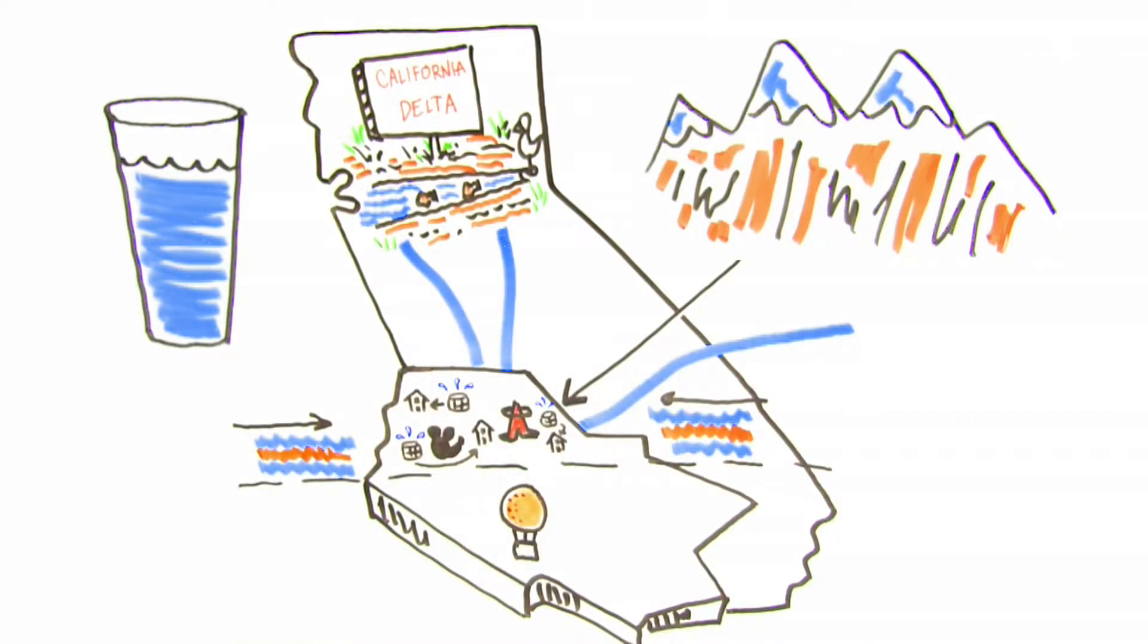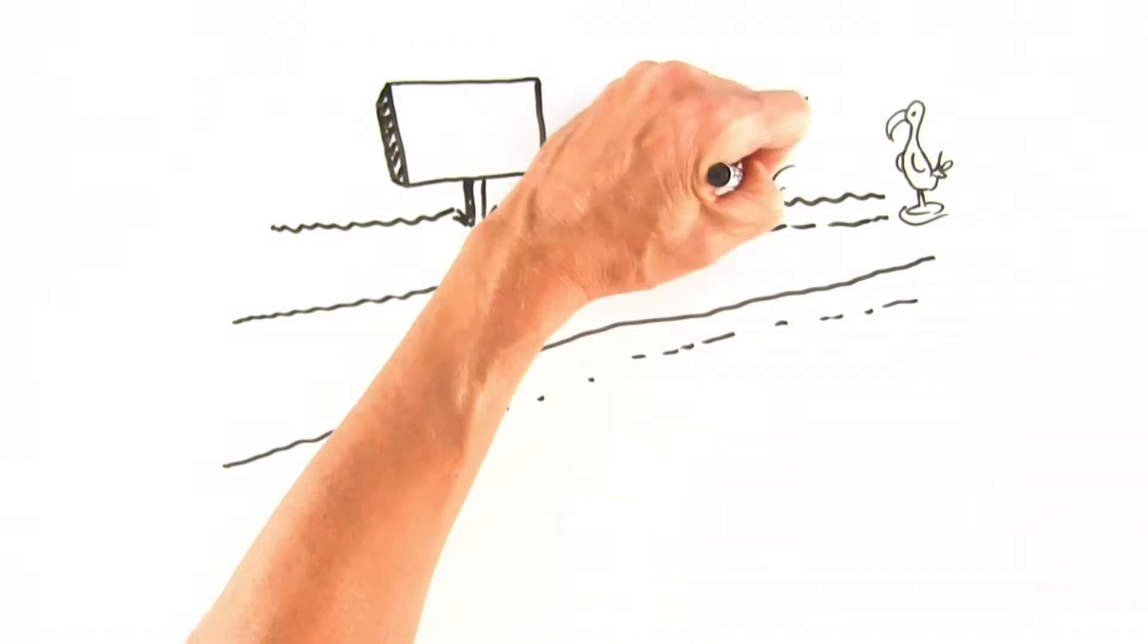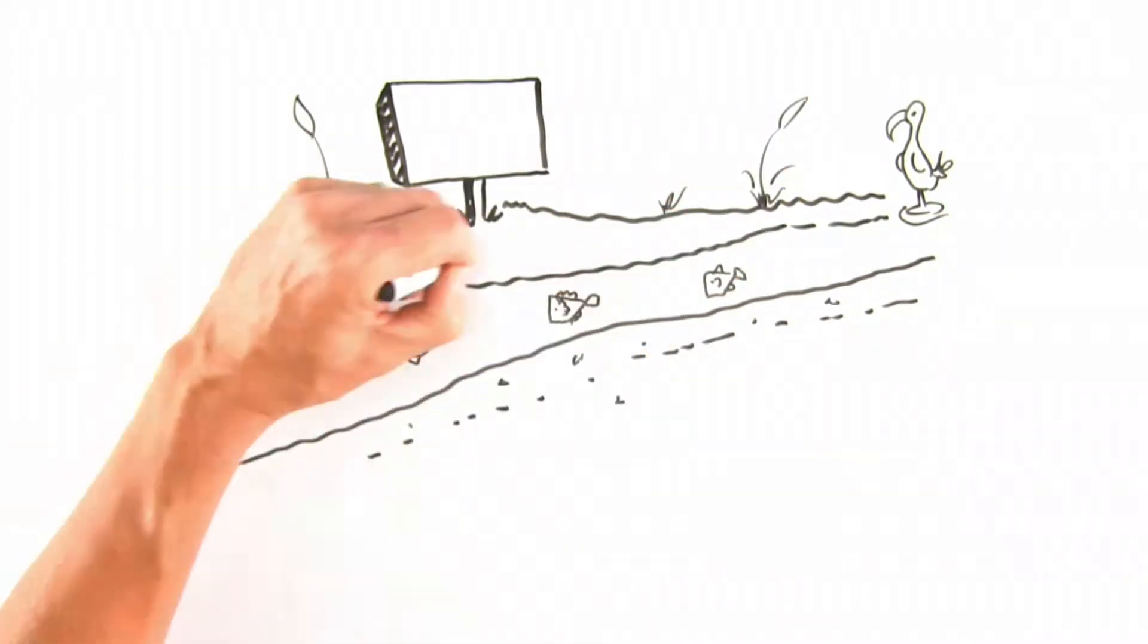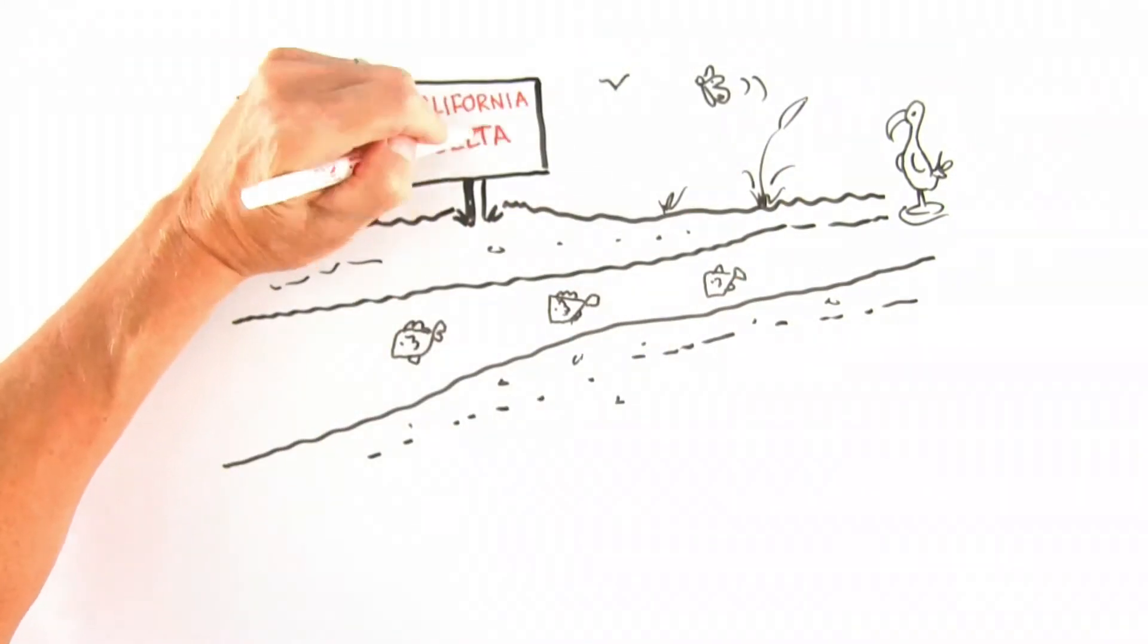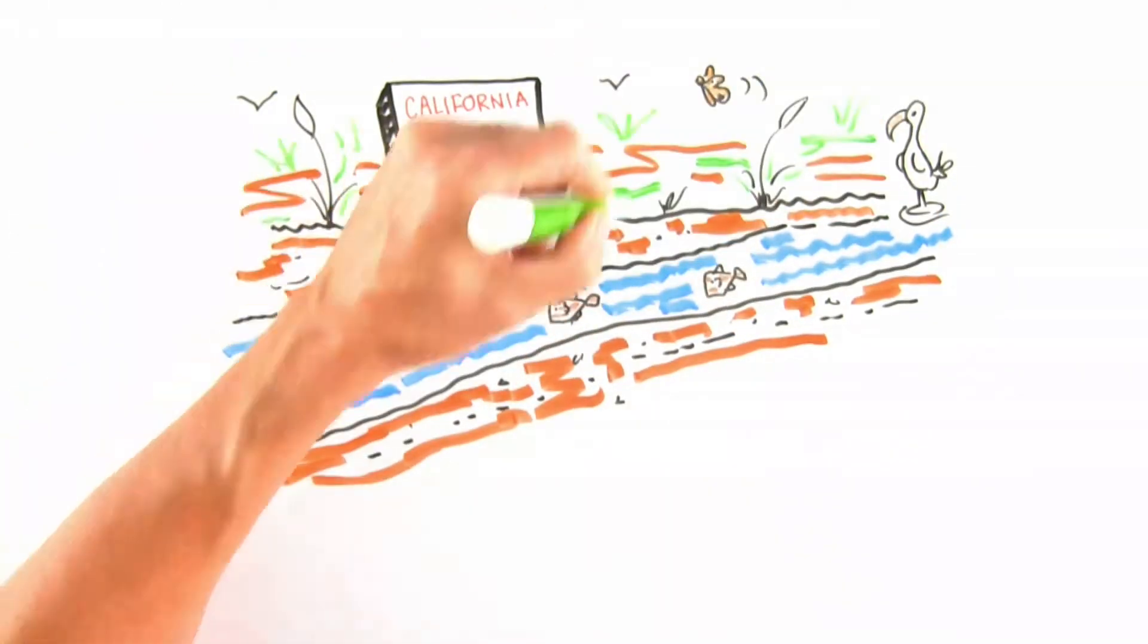The State Water Project is more than 700 miles of open canals and pipelines. Supplies from the North, however, are hampered because the water flows through the Sacramento-San Joaquin Delta and is often reduced because of concerns about fish and other environmental factors.